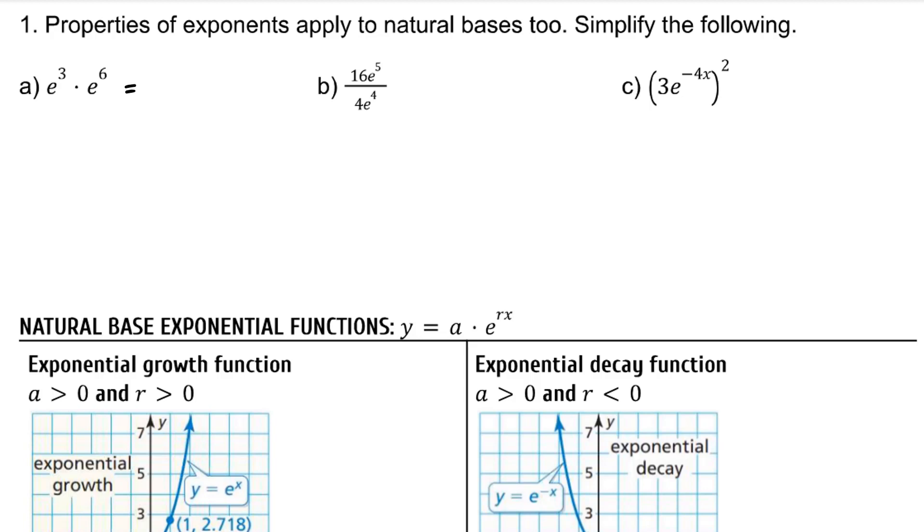Because we are multiplying the same base of e, we add the exponents. To reduce this quotient, 16 divided by 4 is 4. e to the 5 divided by e to the 4 means we subtract those exponents and we get 4e.